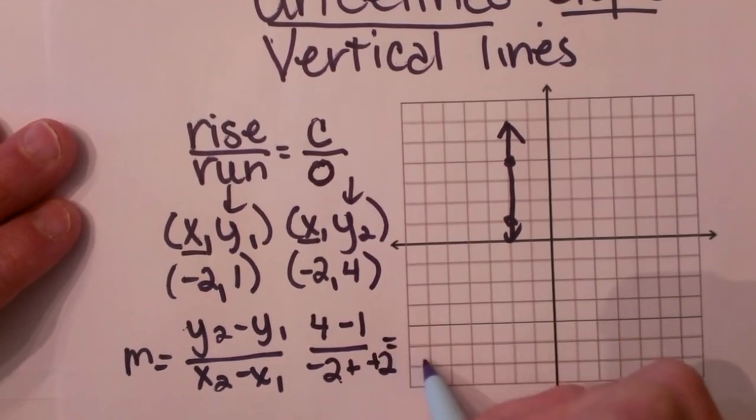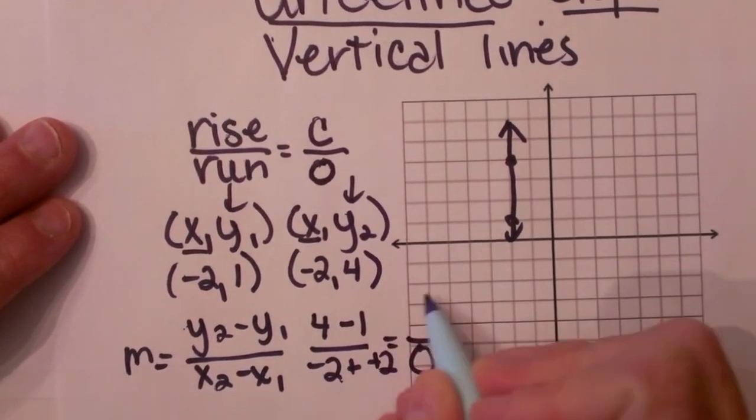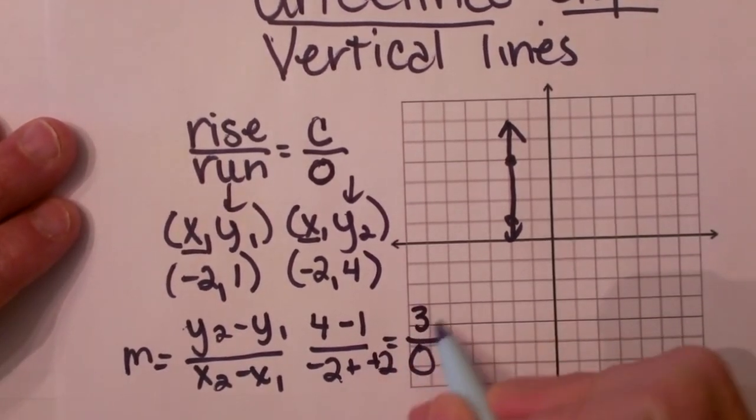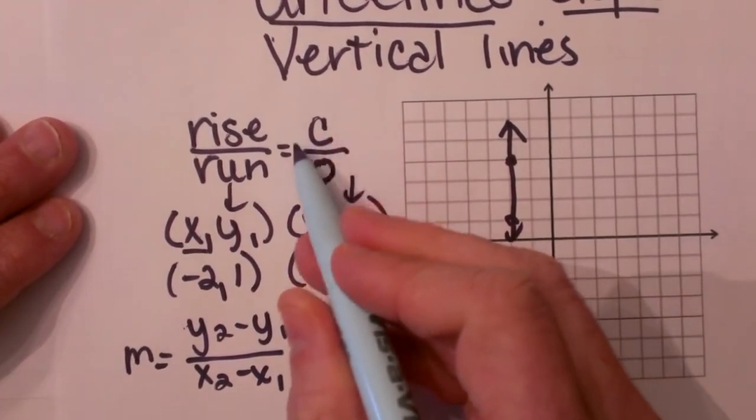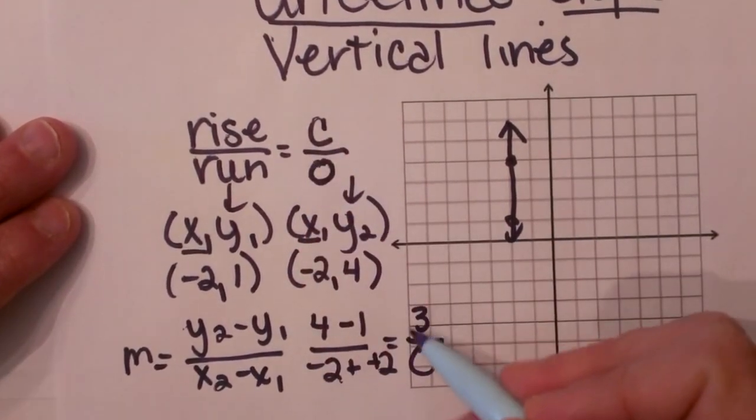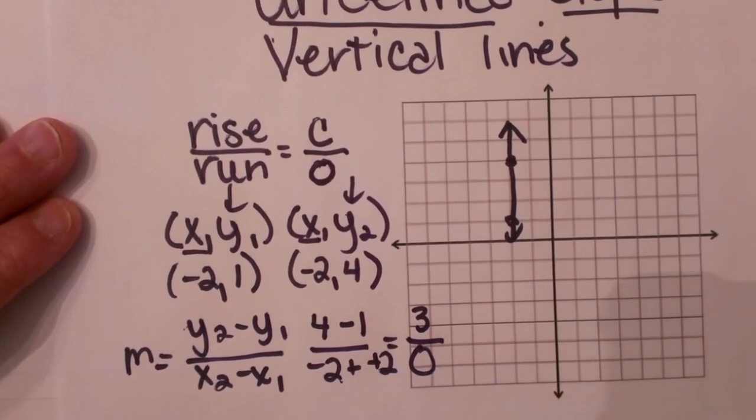Double negatives make a positive, so notice I am getting a zero in the denominator and a 3 in the top. The top, that constant, it doesn't matter the value, but the bottom is what matters, the fact that you are getting a zero.